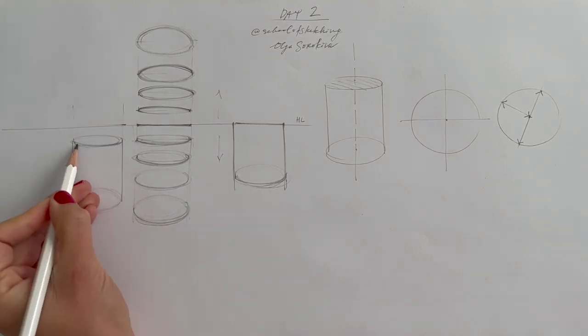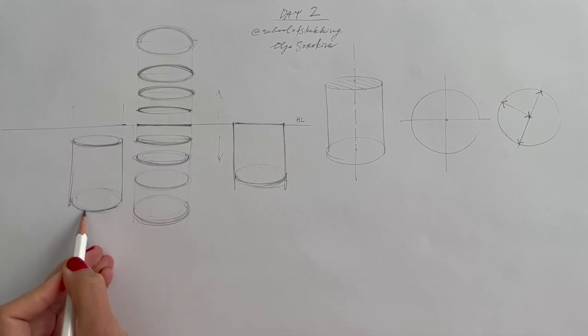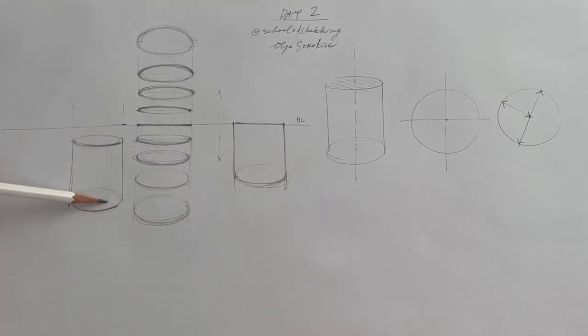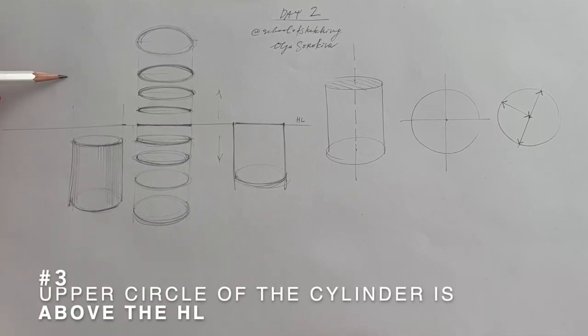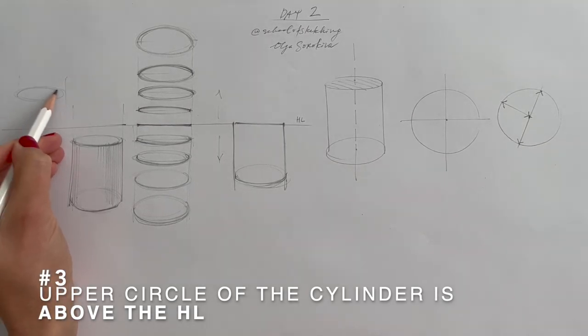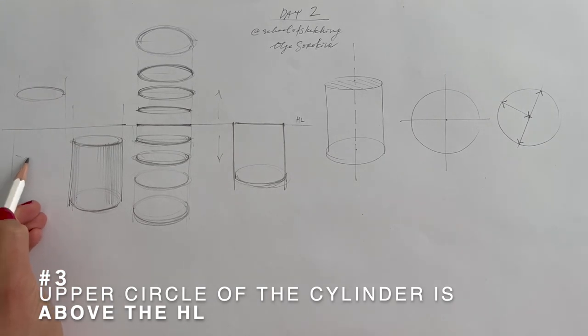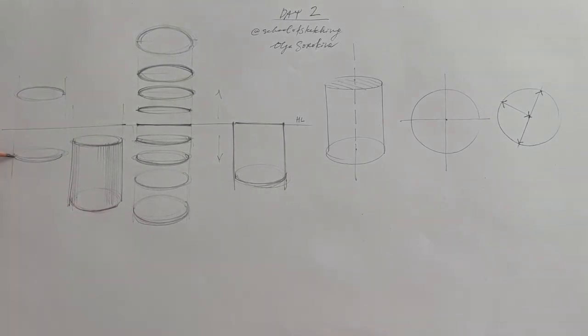And the bottom circle is opening so much more because it's further away from the horizon line. I instantly want to add some hatching. What can you do? I have academic drawing background. So let me add some hatching. All right. Scenario number three. The upper circle of the cylinder is above the horizon line and the bottom circle is below the horizon line. How this cylinder will look like? It will look like this.